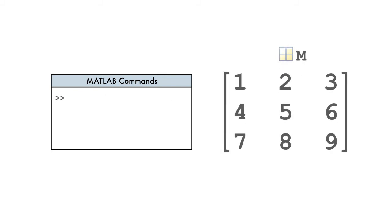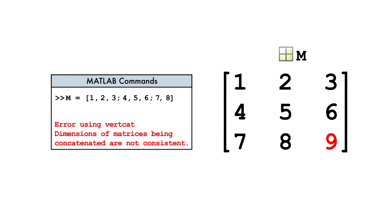When typing in numbers by hand, it's easy to make a mistake and accidentally put too many or too few elements in a row of the matrix. This results in a concatenation error message.